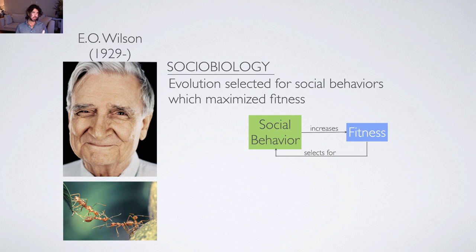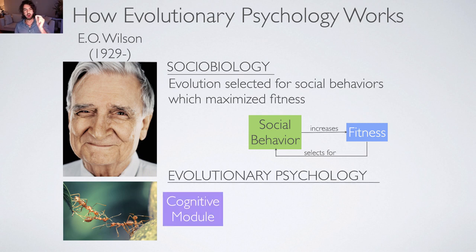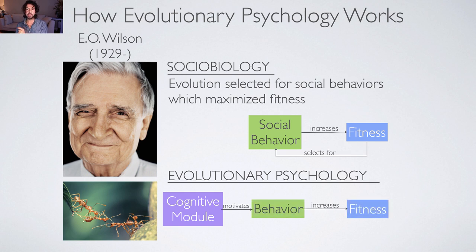The reason we don't talk about sociobiology as much, and do talk about evolutionary psychology, is that when evolutionary psychology emerged in the 80s and 90s, it pointed out a serious missing element to sociobiology: what's selected for is not actually a behavior, because it's hard to select a behavior. Behavior is sort of a verb — a thing you do. It's hard to select running, but you can select the underlying physical elements which give rise to that behavior. Evolutionary psychology posited that there is a cognitive module, something happening in the mind, which motivates the type of behavior that ultimately increases fitness — and what gets selected into the next generation is not the behavior itself, but whatever actually motivated that behavior.